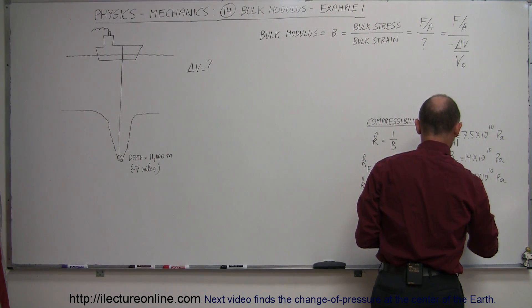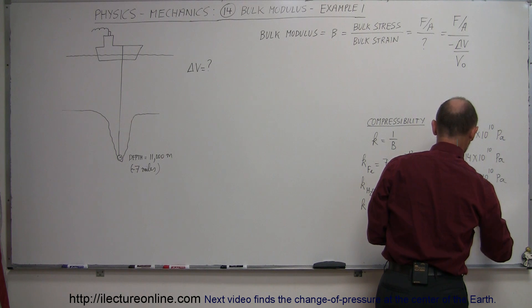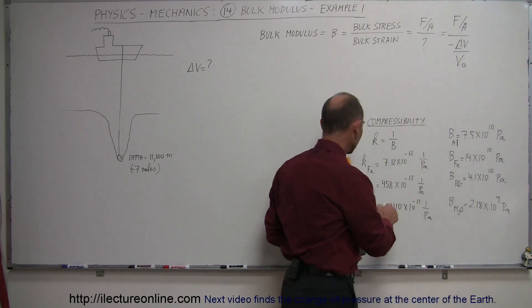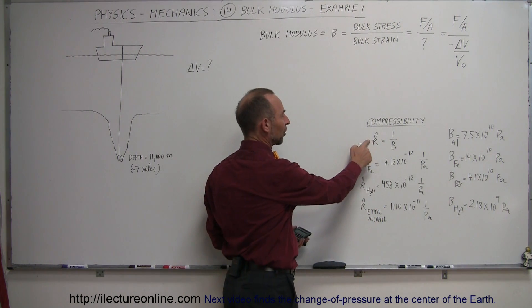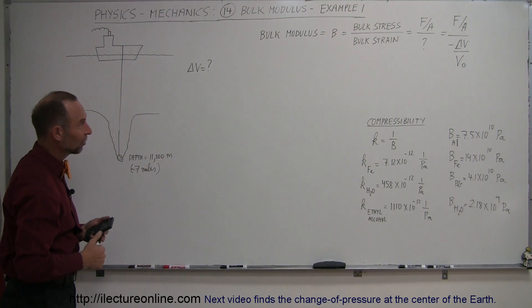So, we get, so the bulk modulus for water would be 2.18 times 10 to the ninth. So, the bulk modulus for H2O is equal to 2.18 times 10 to the ninth Pascals. So, I simply took the compressibility, since, of course, compressibility is the inverse of the bulk modulus. That means the bulk modulus is the inverse of the compressibility.